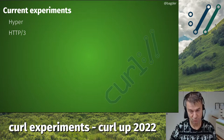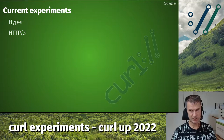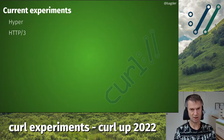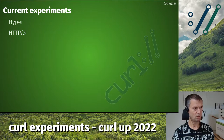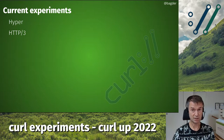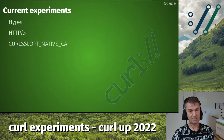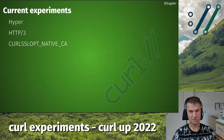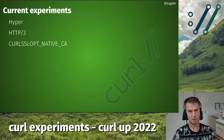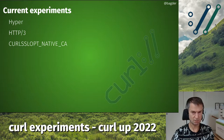Another pretty big experiment is the HTTP/3 support, and HTTP/3 in itself has three different backends — a bunch of different build combinations and third-party libraries you could opt to use if you want to do HTTP/3. People have been using it and we're going forward slowly. There will be a separate presentation about curl and HTTP/3 with more details on how you can try it out. Another experiment that has gone a little under the radar is native CA store support when you build with OpenSSL on Windows.